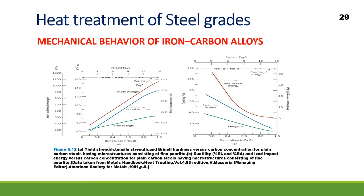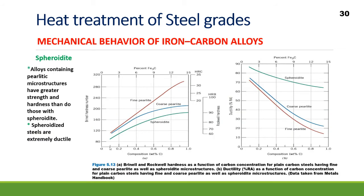Next is spheroidite. Alloys containing a pearlitic microstructure have greater strength and hardness than those with spheroidite. Fine pearlite has the highest hardness, coarse pearlite is less than fine pearlite, and spheroidite has minimum strength. On the other hand, spheroidite steels are extremely ductile, while fine pearlite is the least ductile and coarse pearlite falls in the middle.